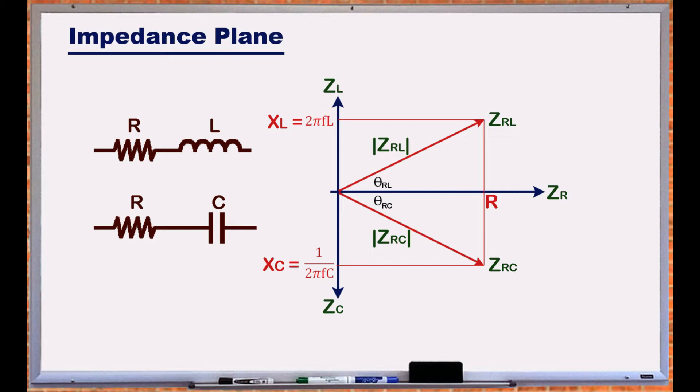Note that theta is 0 for an ideal resistor, 90 degrees for an inductor, and minus 90 degrees for a capacitor.